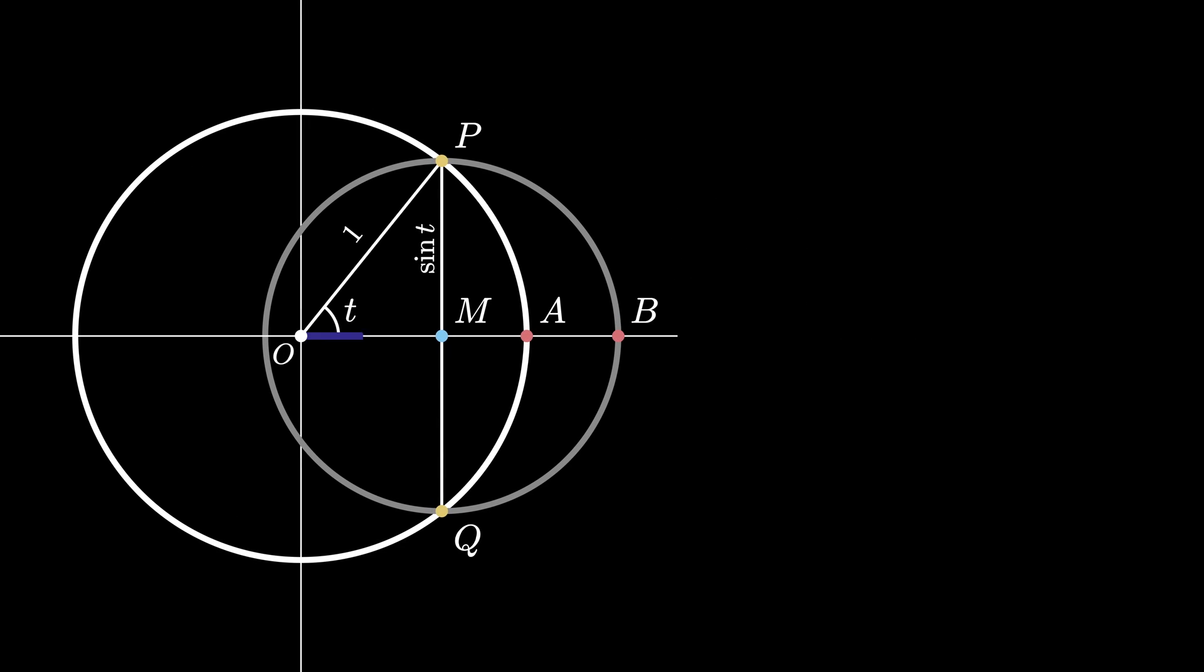In this diagram, we see that the length of the line segment OM plus the length of the line segment MP is equal to the length of the line segment OB, and this is greater than or equal to the length of the line segment OA.